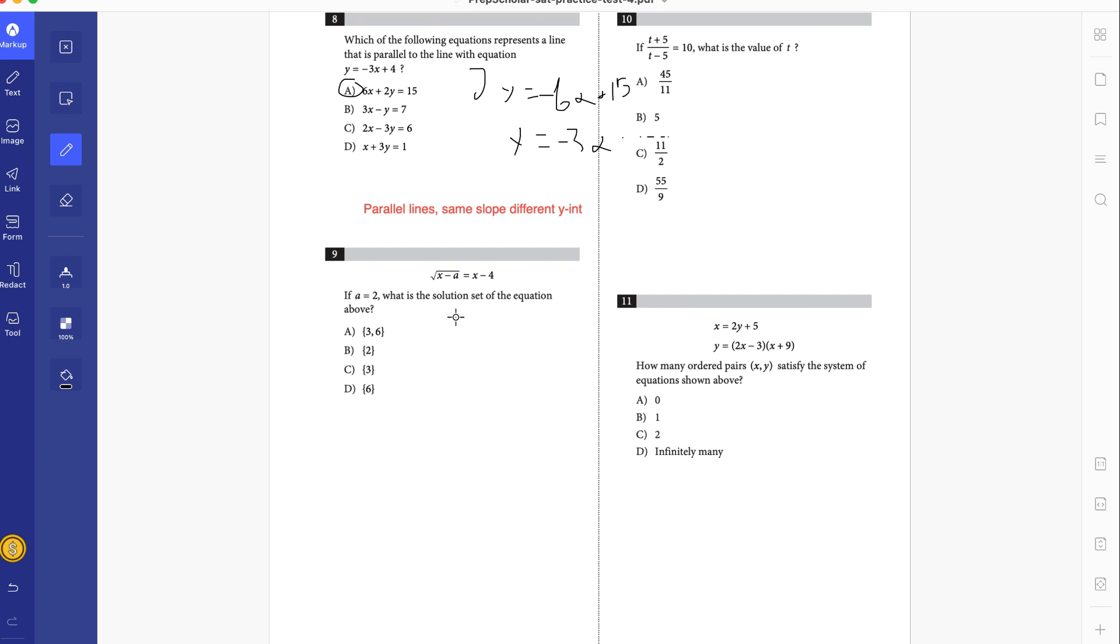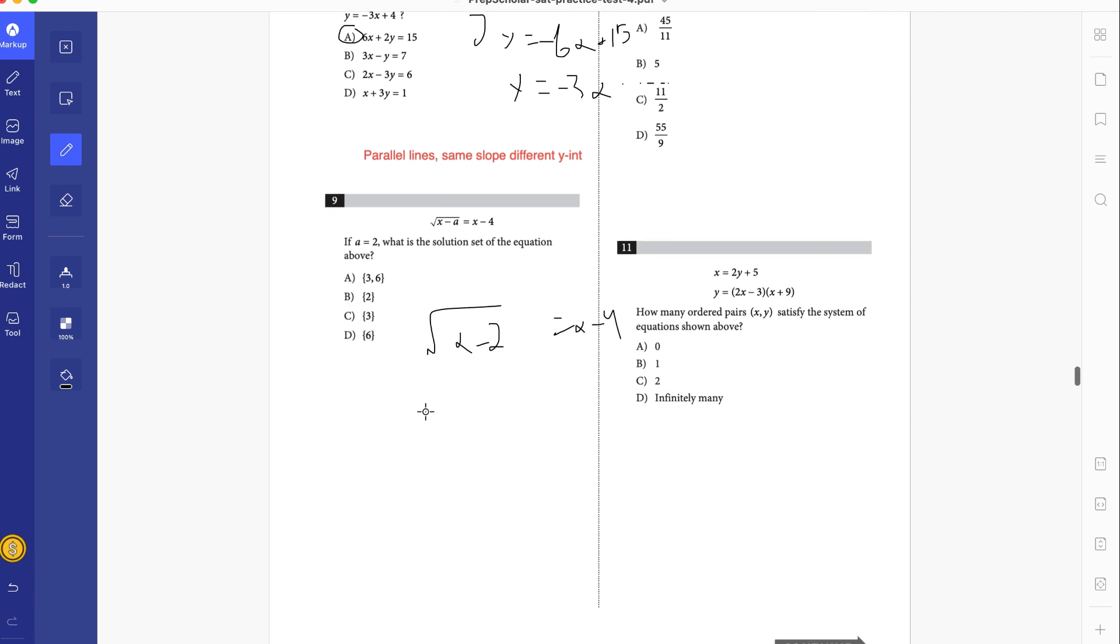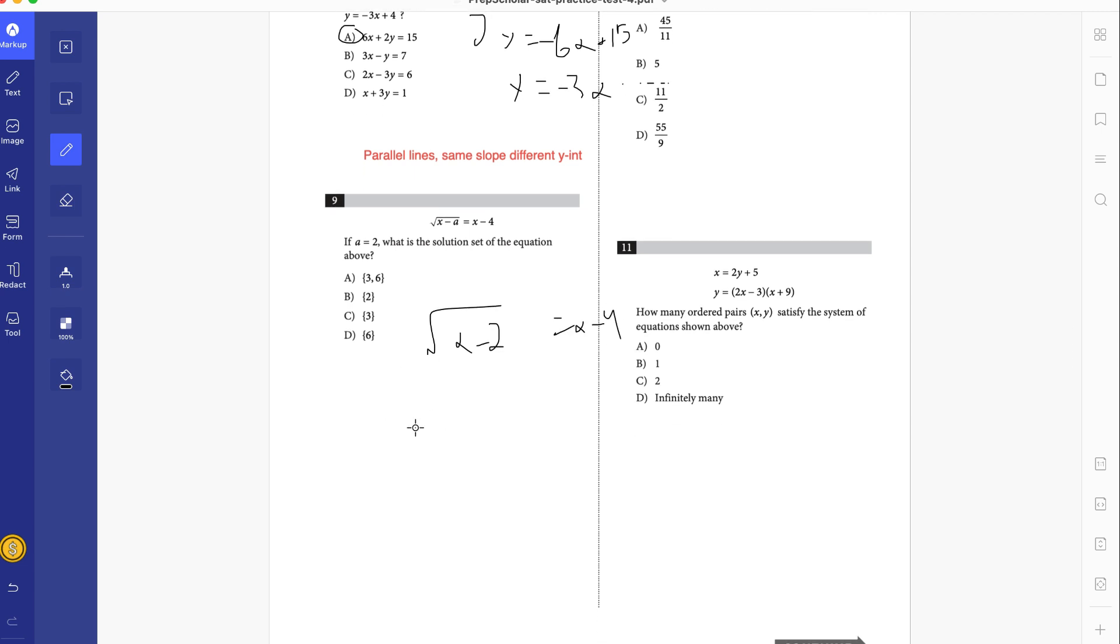9. If a equals 2, what is the solution set of the equation above? We have square root of x minus 2 equals x minus 4. At this point, we can literally just plug it in. If we put in 6, we get 6 minus 2 is 4. 6 minus 4 is 2. So we have 2 equals 2. So 6 works. If you plug in 3, we get 1 over here and negative 1 over here. So 3 doesn't work. If you plug in 2, we get 0 over here and negative 2 over here. So 2 doesn't work either. So just D.